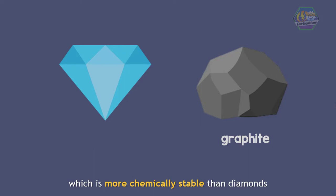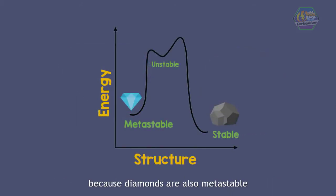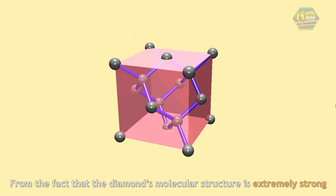Which is more chemically stable than diamonds. But diamonds don't just instantly degrade into graphite because diamonds are also metastable, in which it has a kinetic energy barrier that atoms must overcome to lower its energy states.